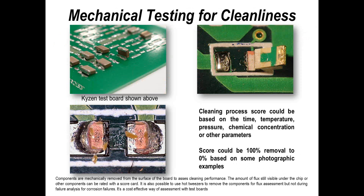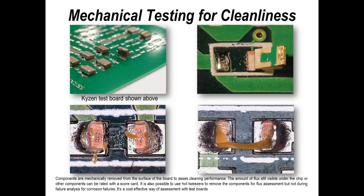Another technique, quite popular in our industry and used by many cleaning manufacturers, is to de-board assemblies and take the components off to look at residues underneath. In the case of Kaizen, they put a score against it — the amount of contamination left relates to zero to 100%, and after a cleaning process, they come up with an evaluation number. Here I've removed a component from a printed circuit board — you can see there is still some residue left underneath where the chip capacitor was, but it's certainly a lot cleaner on the right than on the left. It's more representative of the assembly process but more time-consuming than using the glass plate trick.